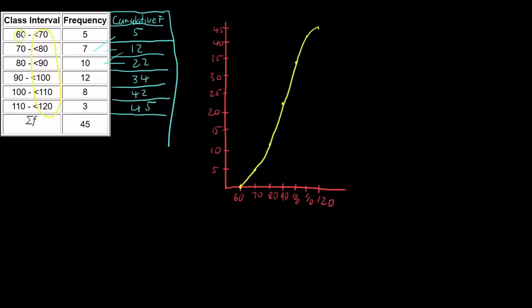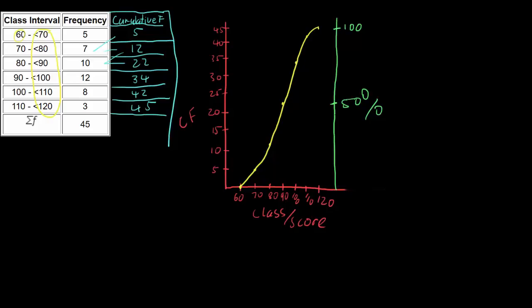The vertical axis represents cumulative frequency (CF) and the horizontal axis represents our class or score. To find the median, we need percentage values, so we add a second vertical axis for percentage. Our maximum point is 45, which equals 100%. The halfway point — half of 45, which is 22.5 — corresponds to 50%. We can also mark 25% and 75% for quartiles, but the median is at 50%.